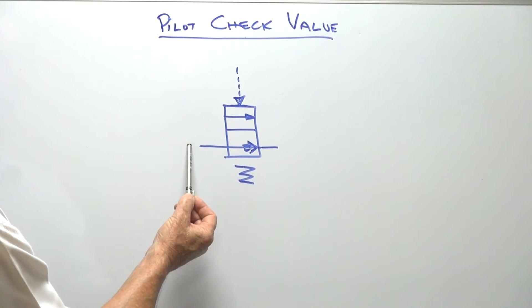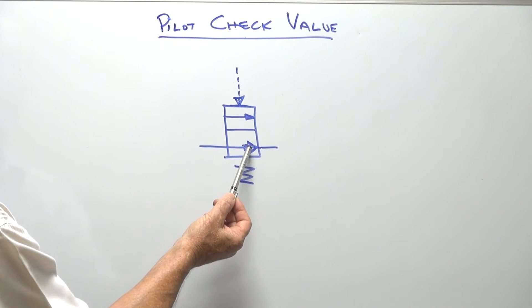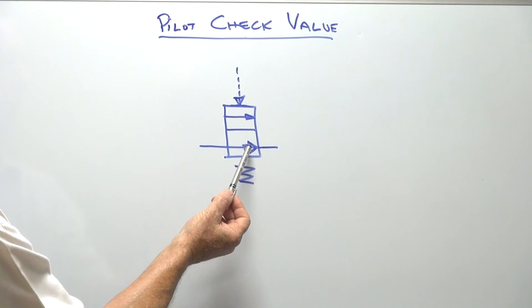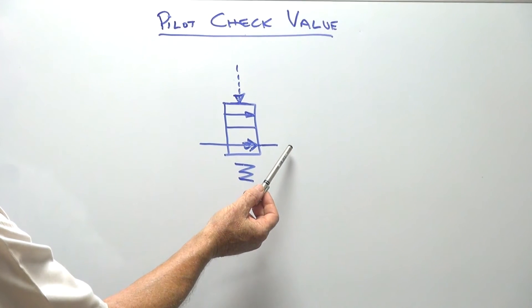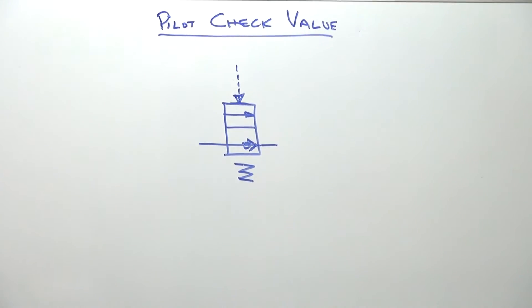Any airflow in this direction is checked. It can't go through because the ball inside or the non-return device stops the flow going through. Put your air signal on the top and we get full flow through the valve.